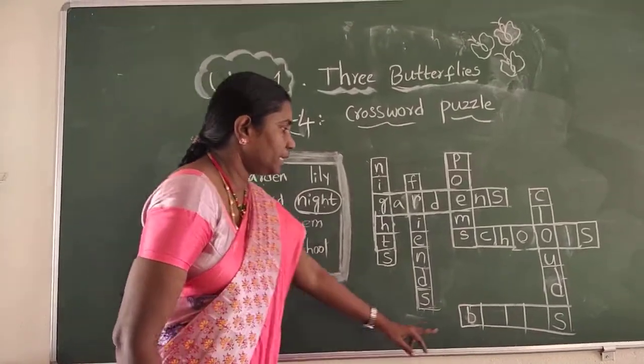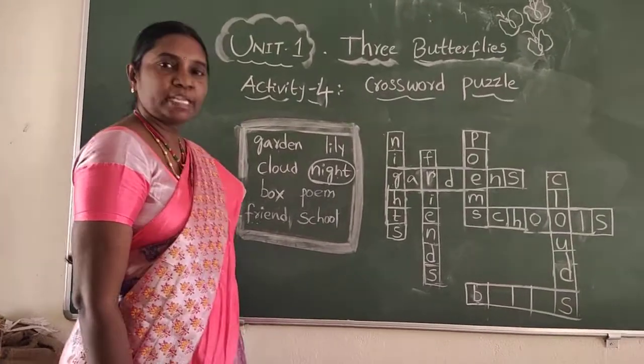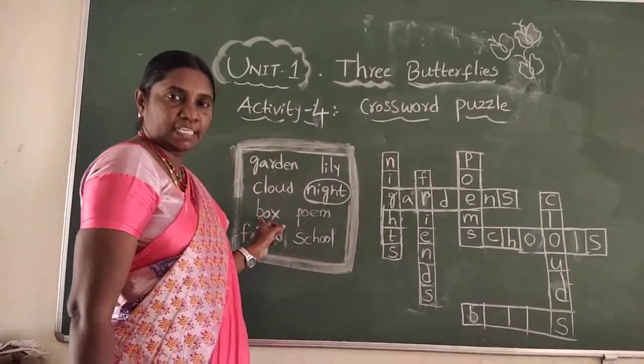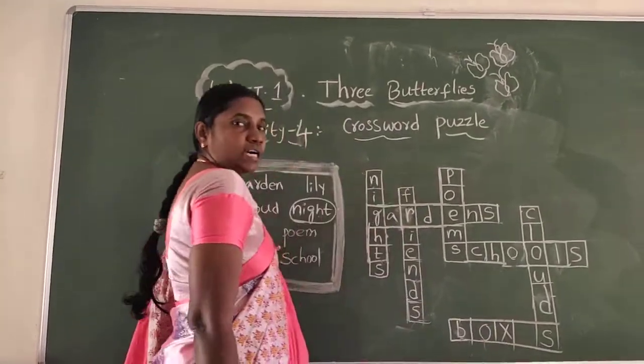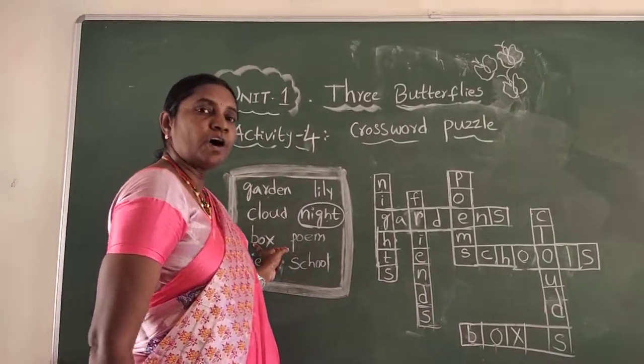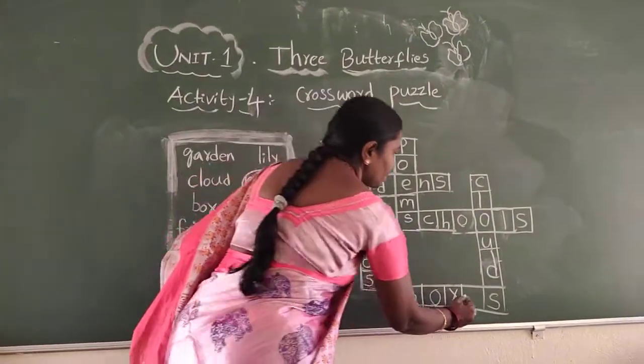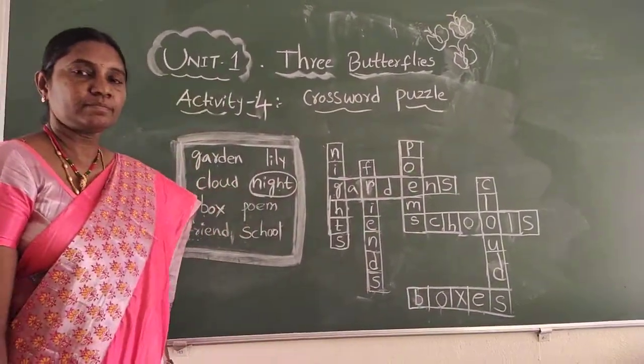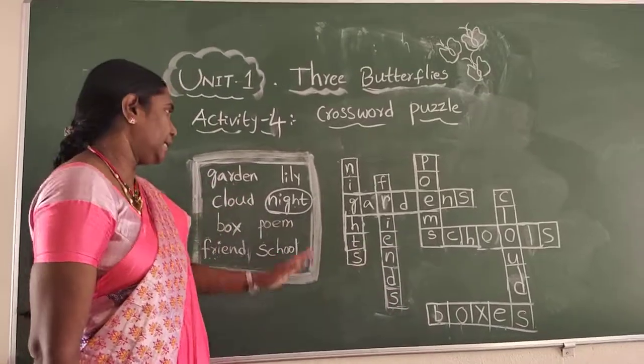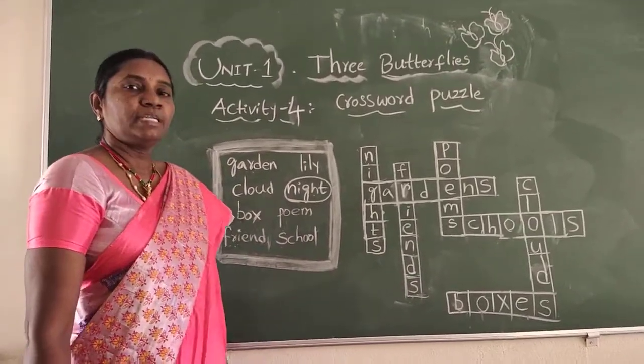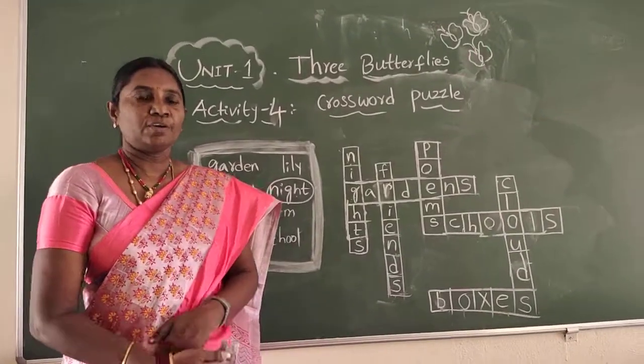And now, here the first letter is B. Come on search, where is B? Yes, here is B. B-O-X. Box. So we have finished the crossword puzzle with the help of keywords, dear children.